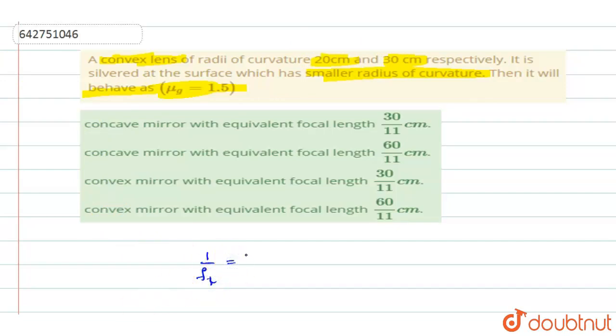So FL is equal to N minus 1 into 1 by R1 minus 1 by R2. So R1 and R2 are given. See, R1 we will take it as 20 cm, and R2 we will take it as minus 30 cm. Applying sign convention, it will be minus 30 cm.